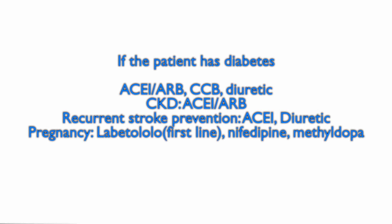With diabetes, start with an ACE inhibitor or ARB, or a calcium channel blocker and diuretic. For chronic kidney disease, all patients need to be on ACE inhibitors or angiotensin receptor blockers. For recurrent stroke prevention or a history of stroke, use an ACE inhibitor or diuretic. For pregnancy, the first-line drug is labetalol, followed by nifedipine and methyldopa.